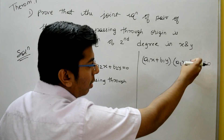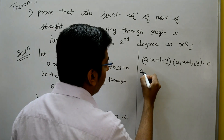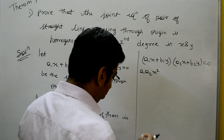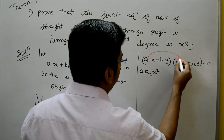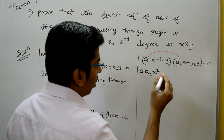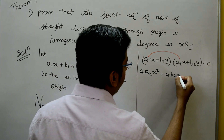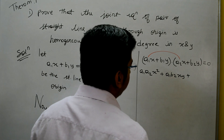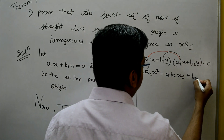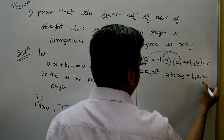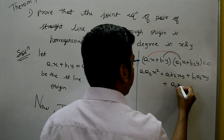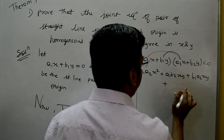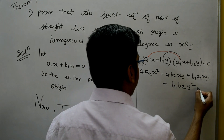Expanding this multiplication, we get A1A2·X² + A1B2·XY + B1A2·XY + B1B2·Y² = 0.